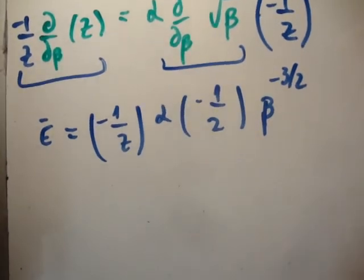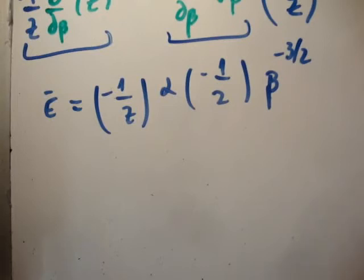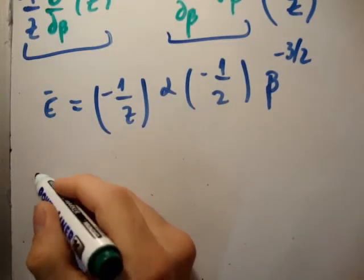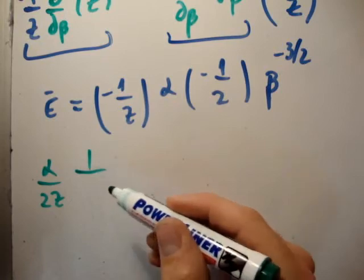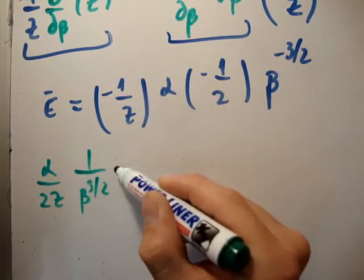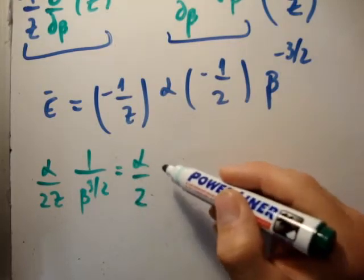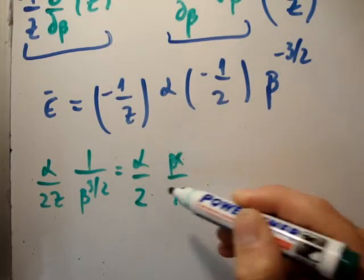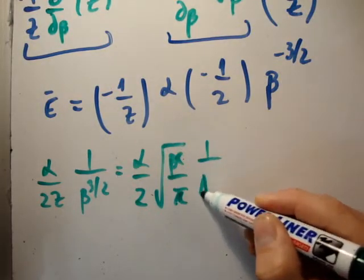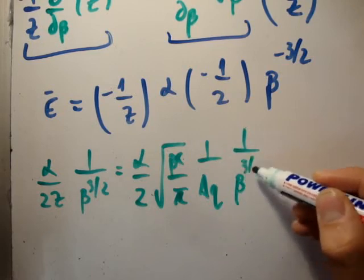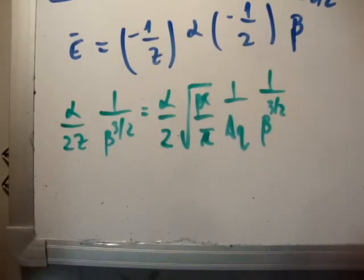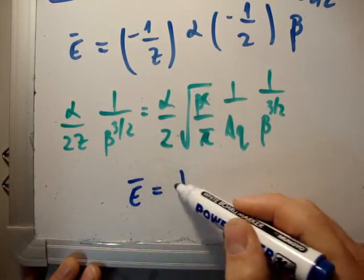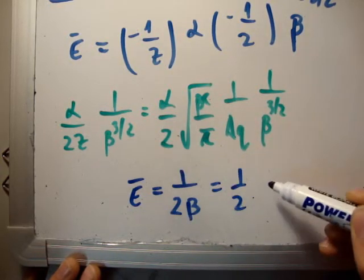Alright, so I'm going to let you plug in alpha. You plug in them all, and you're going to be able to do some cancellations. So just for completeness, I'm going to write out all the bits and pieces that I had. So this is quite long, and you don't need this, really. So alpha over twice z is what I had, and 1 over beta 3 over 2 is equal to alpha over 2 squared beta c over pi, 1 over delta q, 1 over beta 3 over 2. And when you plug in alpha, you'll see that all the things cancel away, and you're going to be left with that the average energy is equal to 1 over twice beta is equal to half kt.